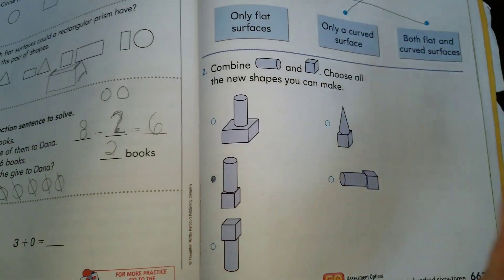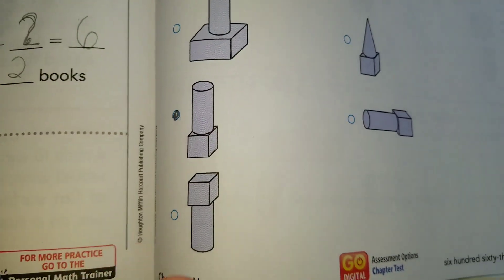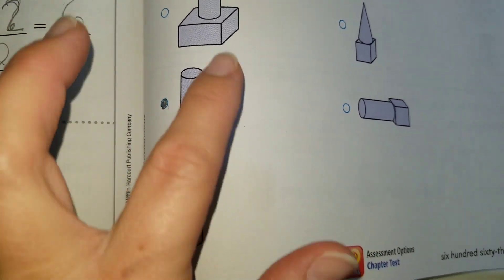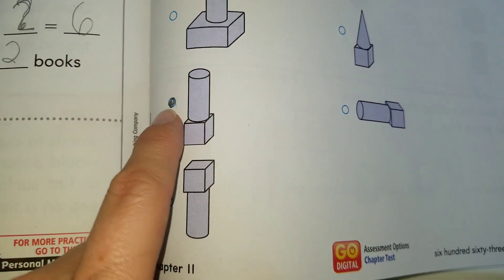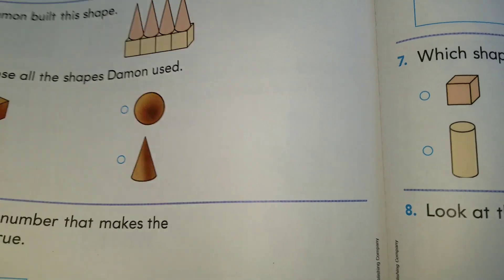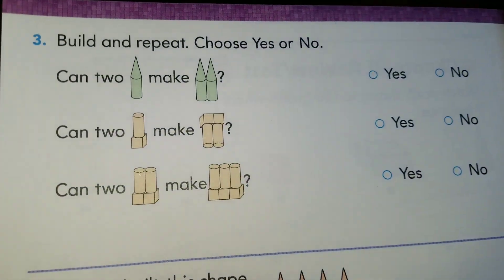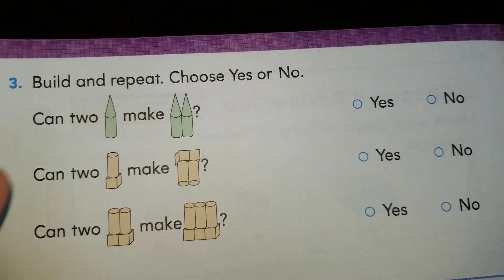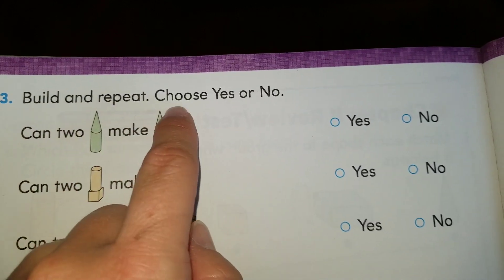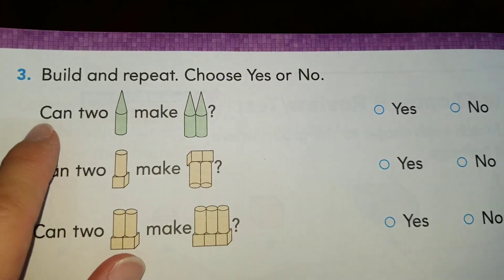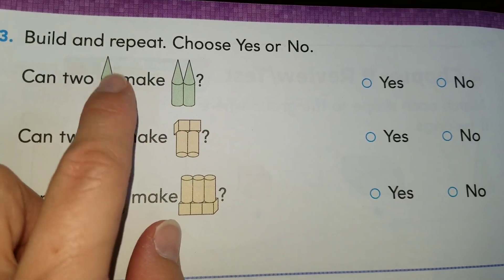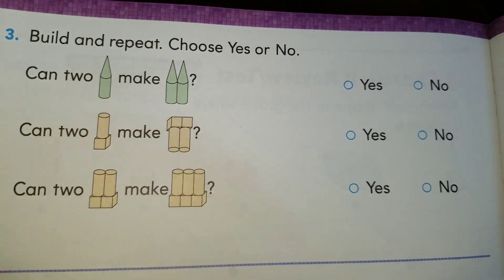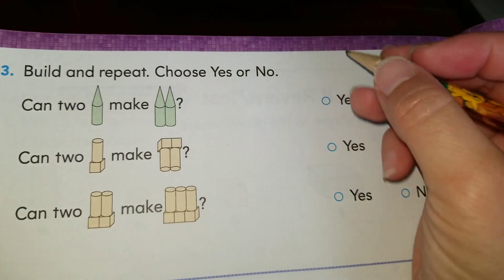So I'm going to try to explain it in Spanish. Which of these shapes has a cube and a cylinder? Let's take a look at this one over here. It says 'build and repeat — choose yes or no.' Can two of these make these? Yes. If we put one more next to it, it can certainly make that shape. It looks like two towers, so we bubble it in. We bubble in when it says yes.